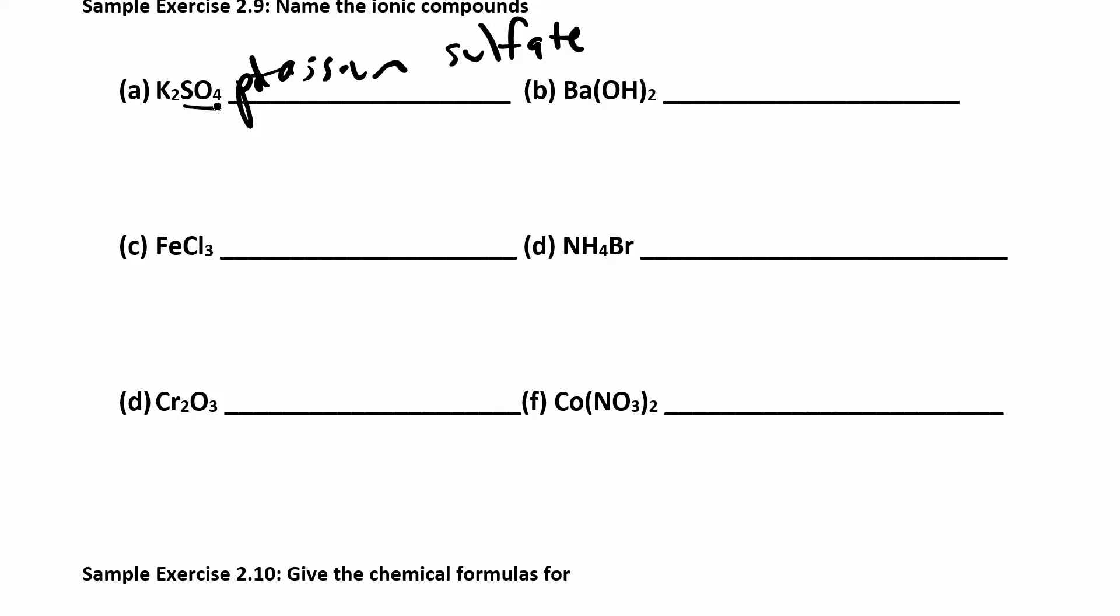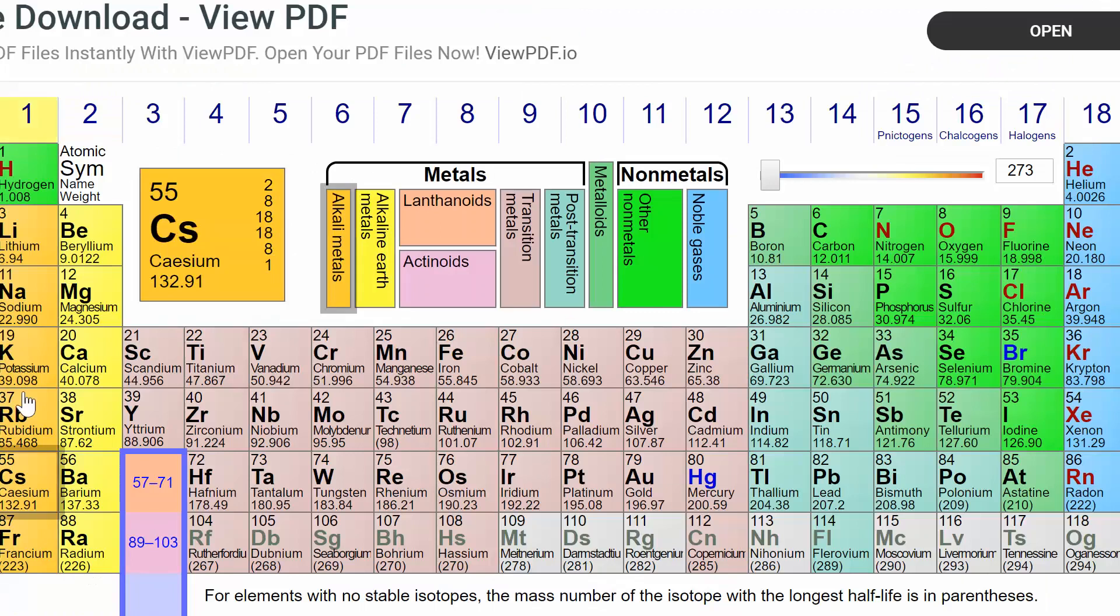I don't have to change the ending on the polyatomic ion. The cation keeps the name the same. The only thing you want to check is: do I need Roman numerals? How do you know? Go back and check. Potassium is a group 1 metal, it's always plus 1, so you don't need any Roman numerals there because it's only going to be plus 1.